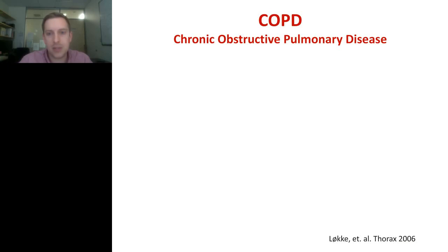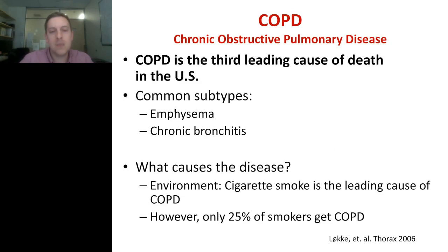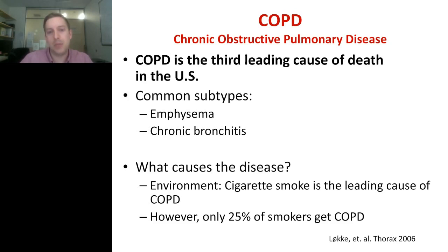COPD is the third leading cause of death in the United States. Its common subtypes, perhaps better known, are emphysema and chronic bronchitis. The disease has a very strong environmental component — cigarette smoke is the leading cause of COPD. However, from a genetics perspective, the interesting part is that only about 25 percent of smokers who did not previously have COPD go on to develop it. So not everyone who smokes gets COPD.